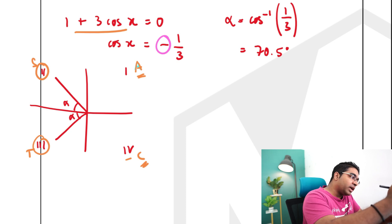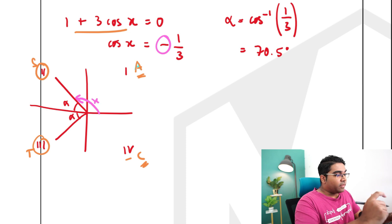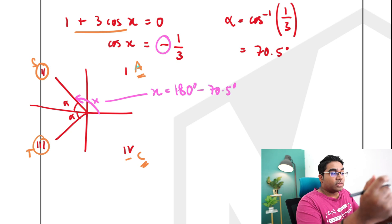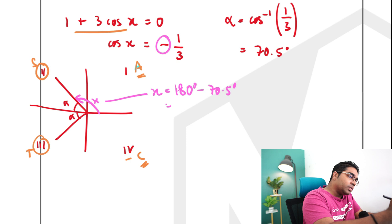And for the second quadrant, x will always, we always start from here, the positive x-axis. So this is x for the second quadrant. And therefore, x is equals to, this value of x will be equals to 180 degrees minus alpha, which is 70.5. And so the answer that we get here will be 109.5 degrees.